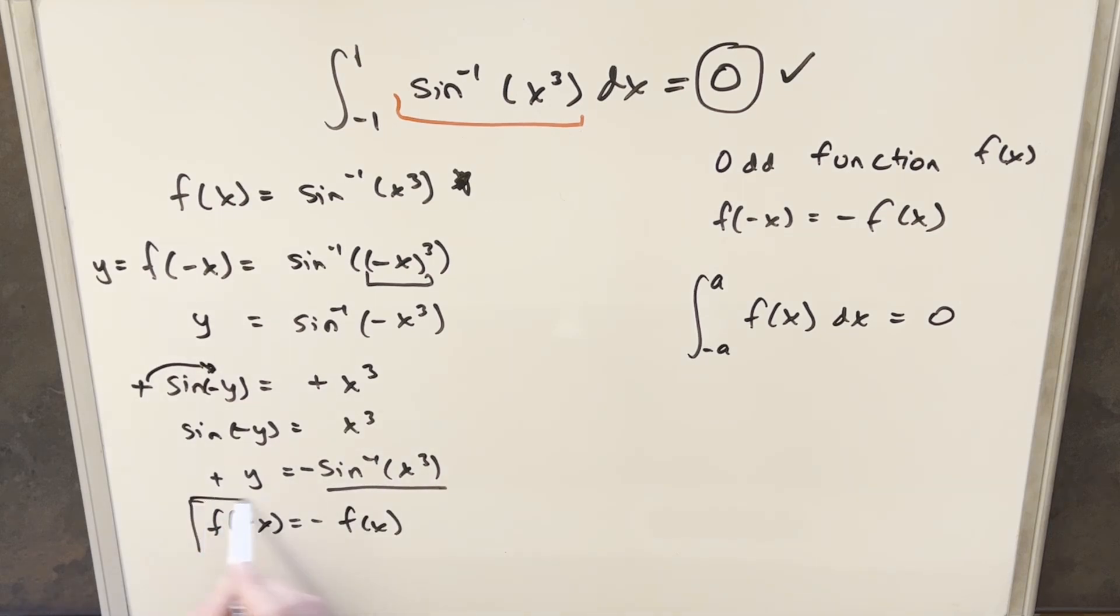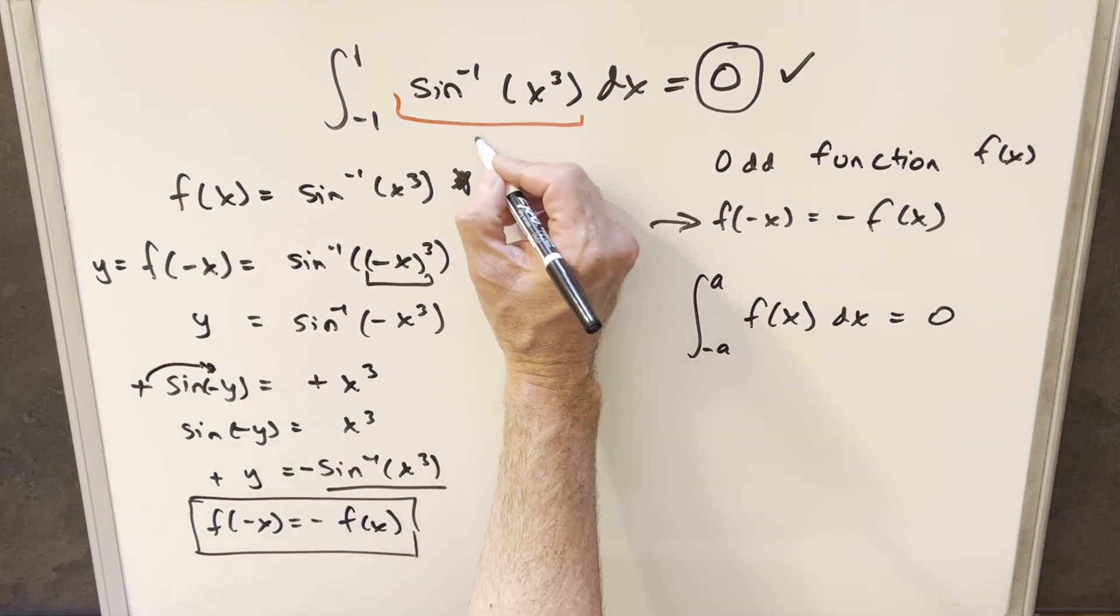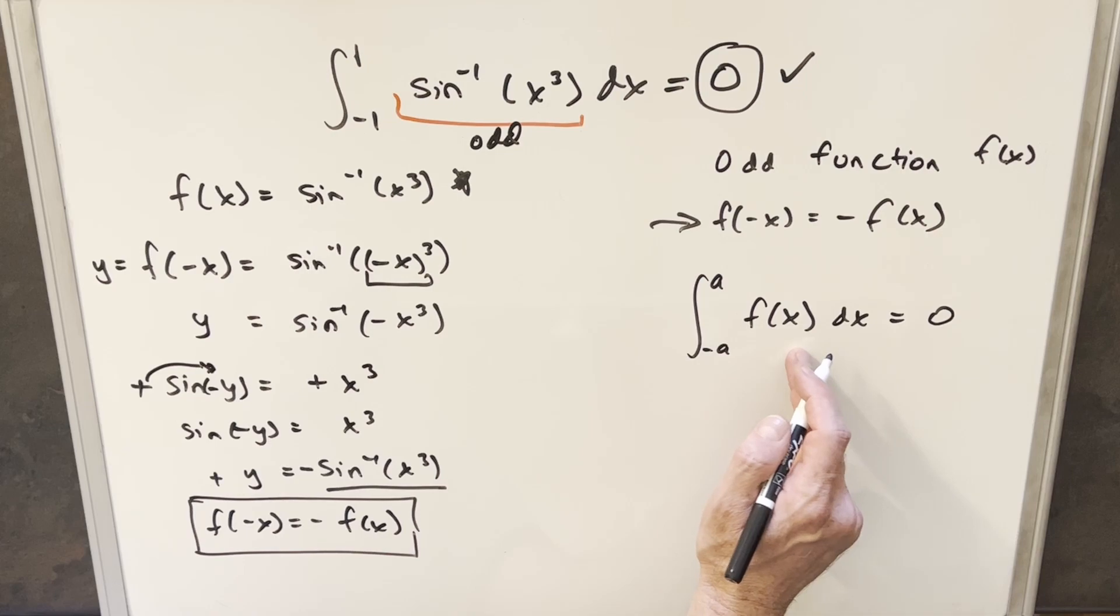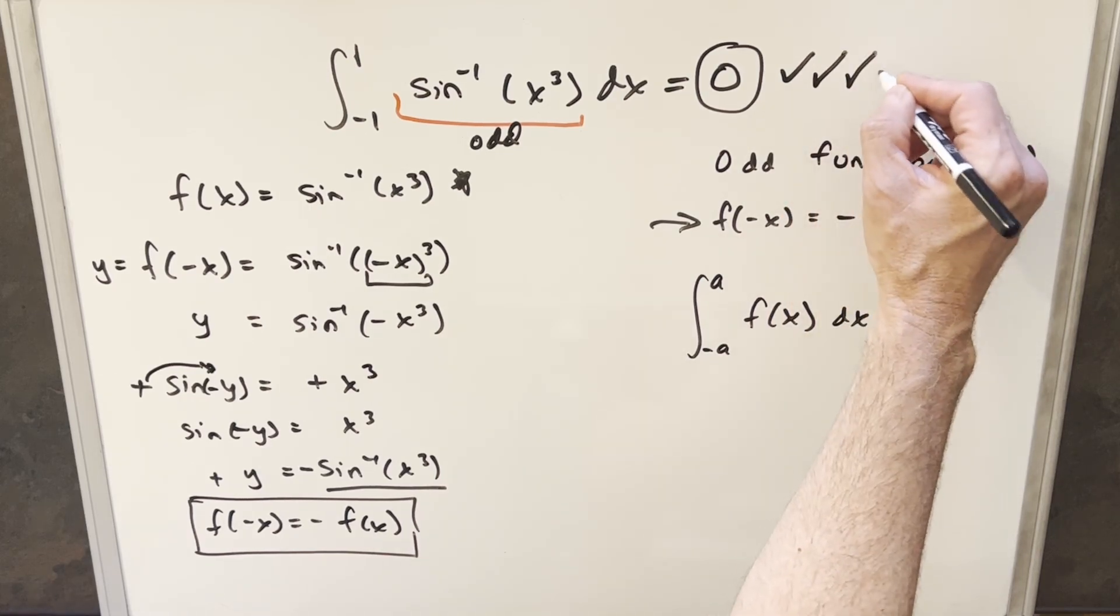But this here that we've just shown, this is our definition of an odd function that we have right here. So we've now shown that this is odd, and it meets this criteria of symmetric bounds, odd function. So the solution, again, is just zero.